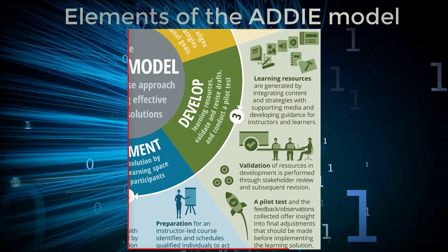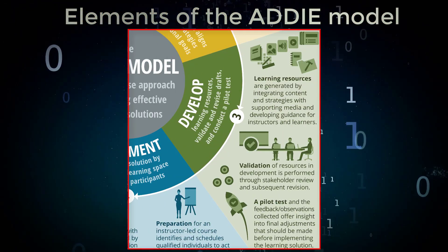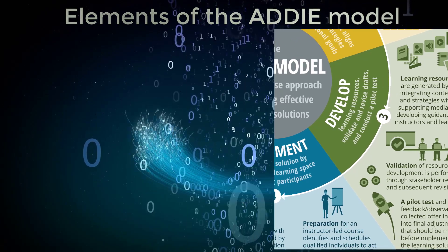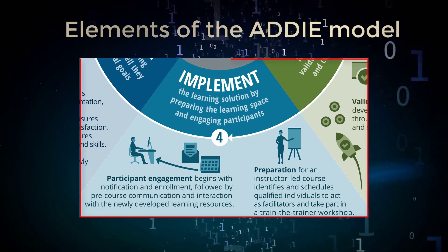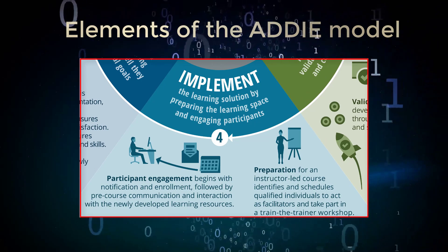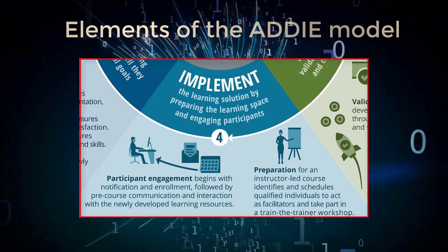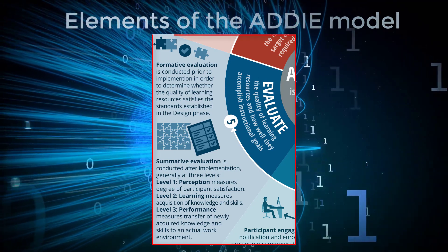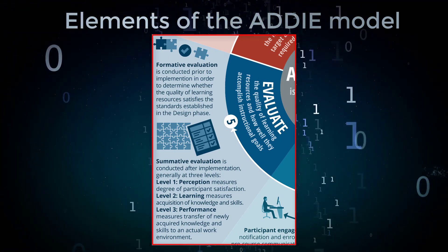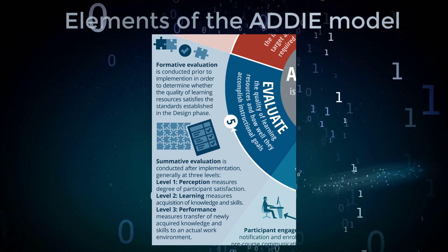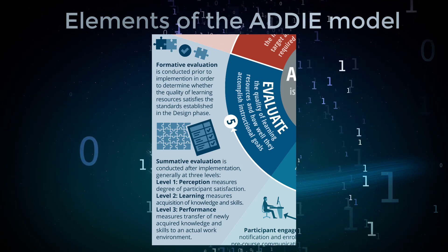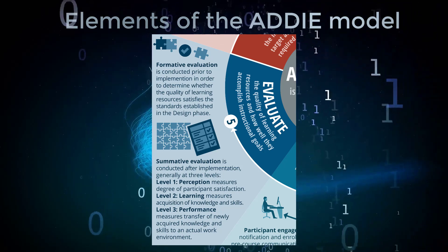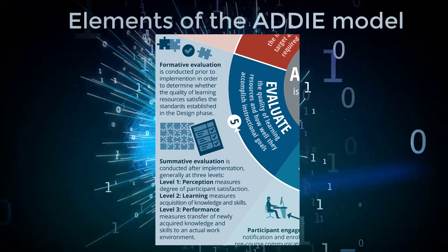During the Development phase, the instructional content is further developed, and technologies are also developed and integrated. The Implementation phase is where the instruction is implemented. The Evaluation phase includes formative evaluation during each stage of program development and summative evaluation focusing on the outcome of the program. Formative evaluations save program resources by identifying problems early.